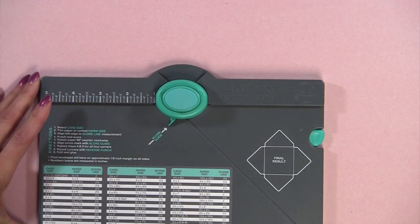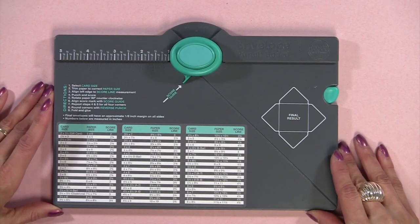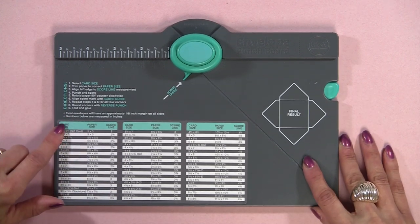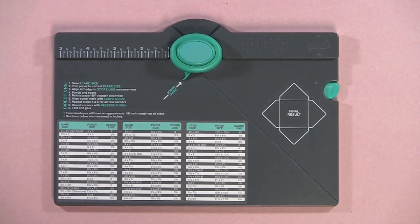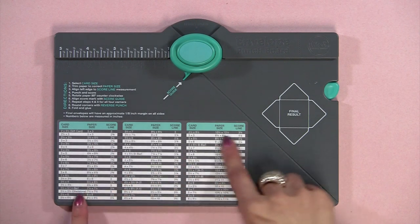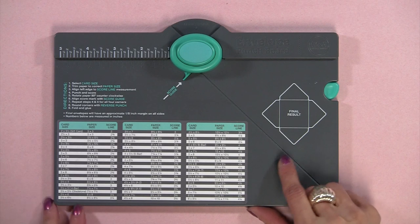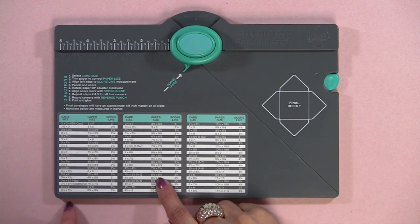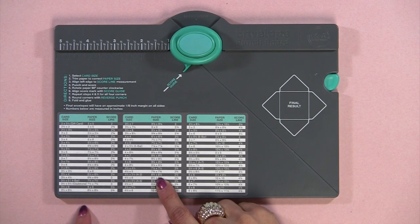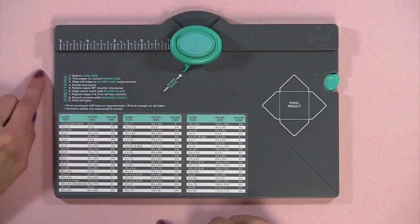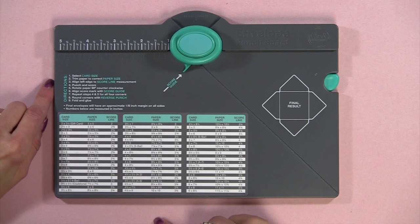Before we make an envelope there are a few things I want to keep in mind about this new product. I didn't try all of the sizes listed on the board. I'm going to be demonstrating the most common size and that is an A2 envelope which fits a 4 and a quarter by 5 and a half inch card.